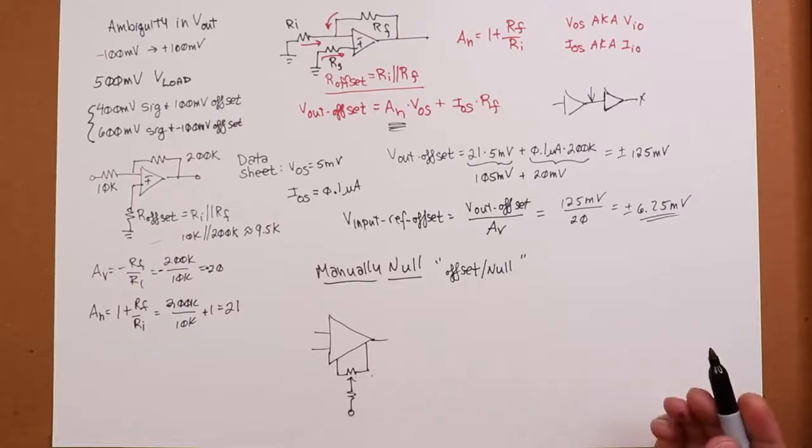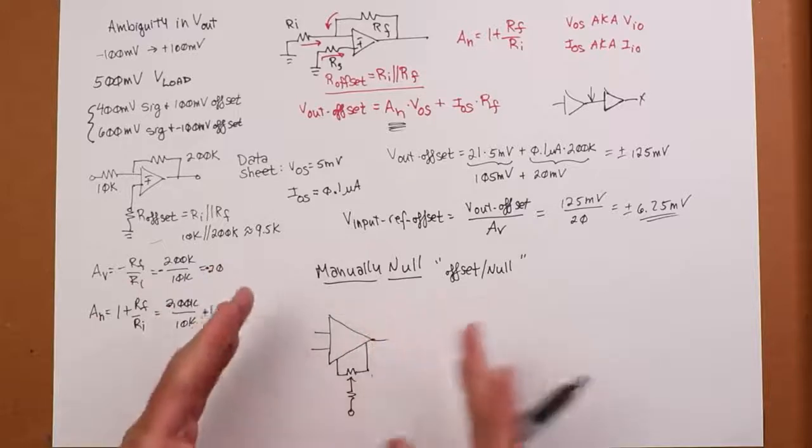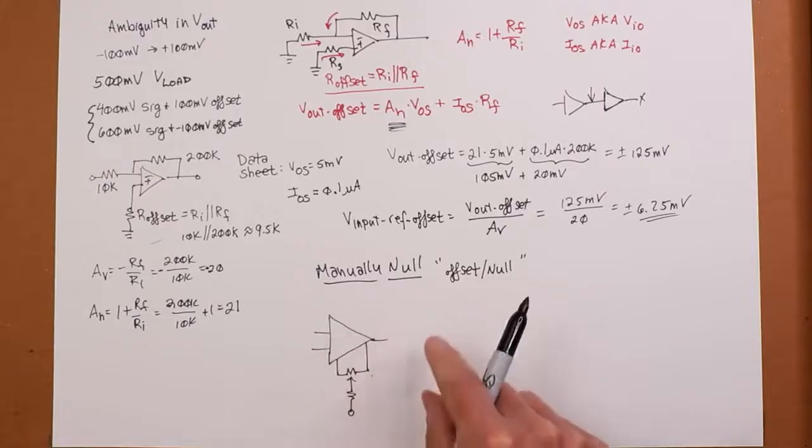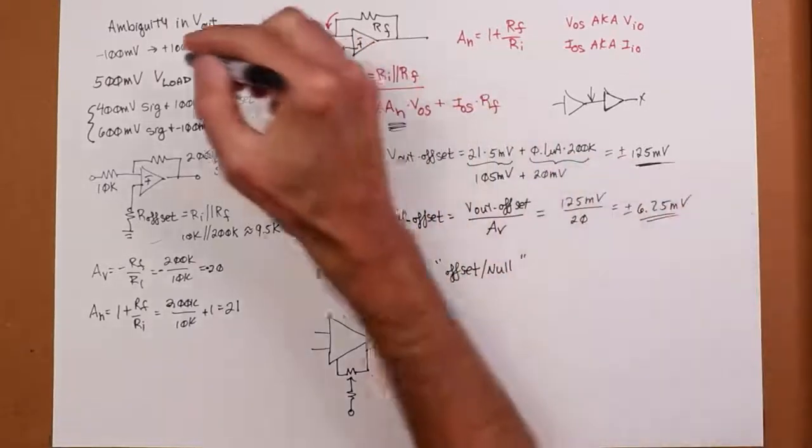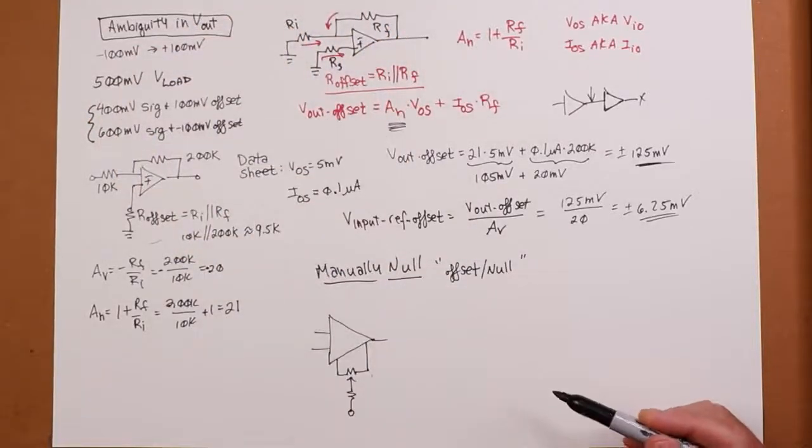And high quality trim pots are not cheap. Of course, you have to physically do this. And over time, it might shift. You might get mechanical movement in here. And it'd have to be recalibrated at some point in the future. But this is an option. If you really have to get this down to a minimum value, to as little ambiguity in there as possible, well, that is a possibility. Okay. Well, that's not everything, because it turns out that offsets are also affected by temperature. And we're going to look at that in the next video.